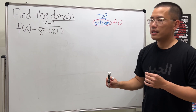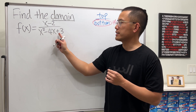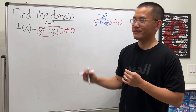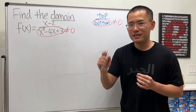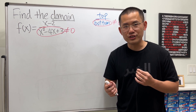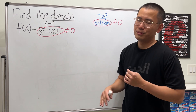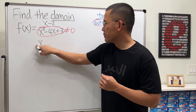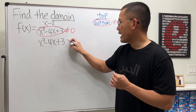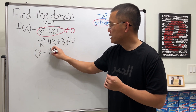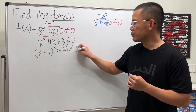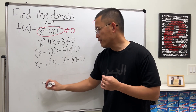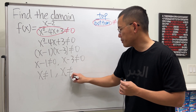Now let's look at another example: x minus 2 over x squared minus 4x plus 3. Just look at the bottom and make it not equal to 0. Remember, 0 over anything non-zero is 0, which is fine, but anything over 0 is undefined. So we set x squared minus 4x plus 3 not equal to 0, factor it to get x minus 1 times x minus 3 not equal to 0. Therefore x cannot be 1, and x cannot be 3.